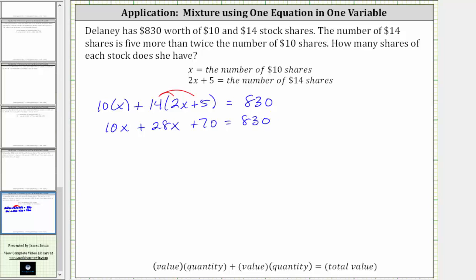Combining like terms on the left, 10x plus 28x is 38x, giving us 38x plus 70 equals 830.